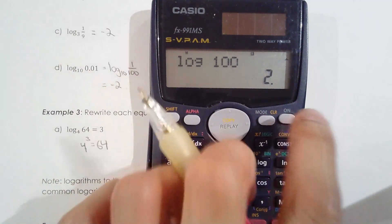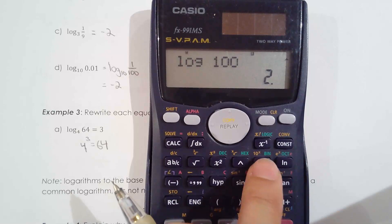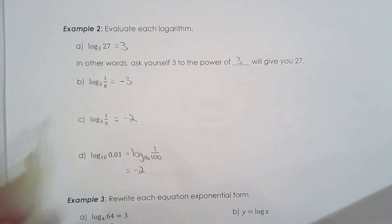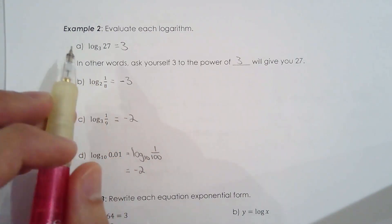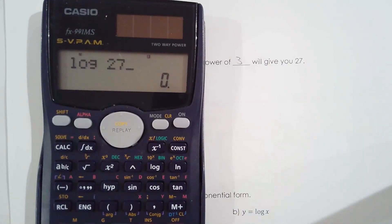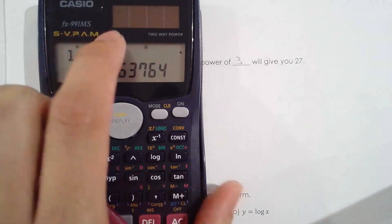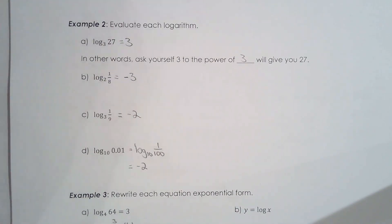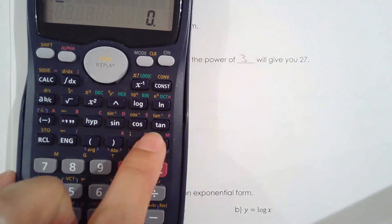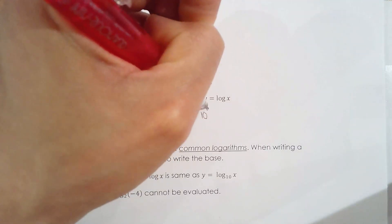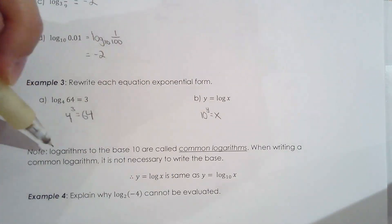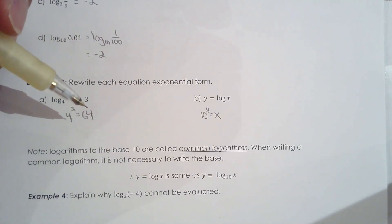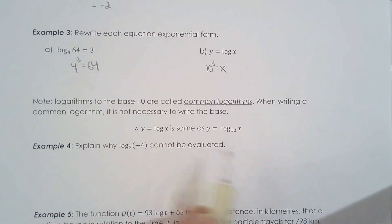The log button on your calculator only works for base 10. If you try log base 3 of 27, you can't just press log 27 — you won't get 3, because that log is base 10. Most calculators can only work with base 10. Logarithms with a base of 10 are called common logarithms. If you don't see a base written, it's base 10. So 10 to the power of y equals x.